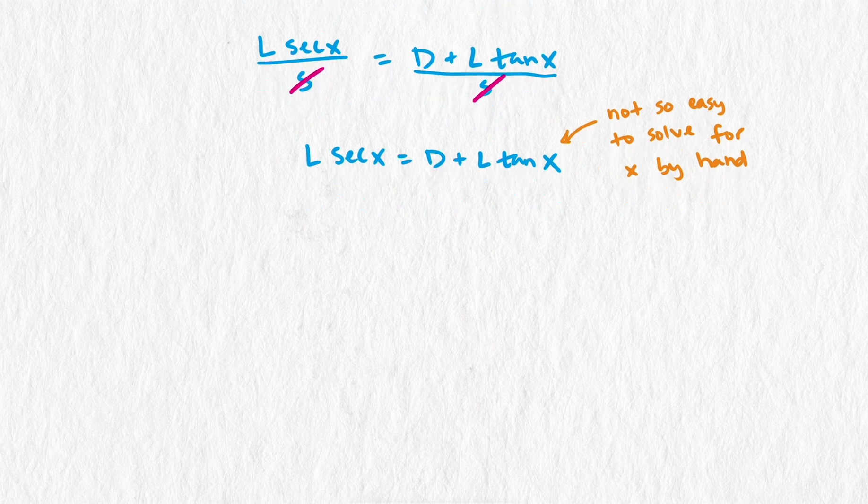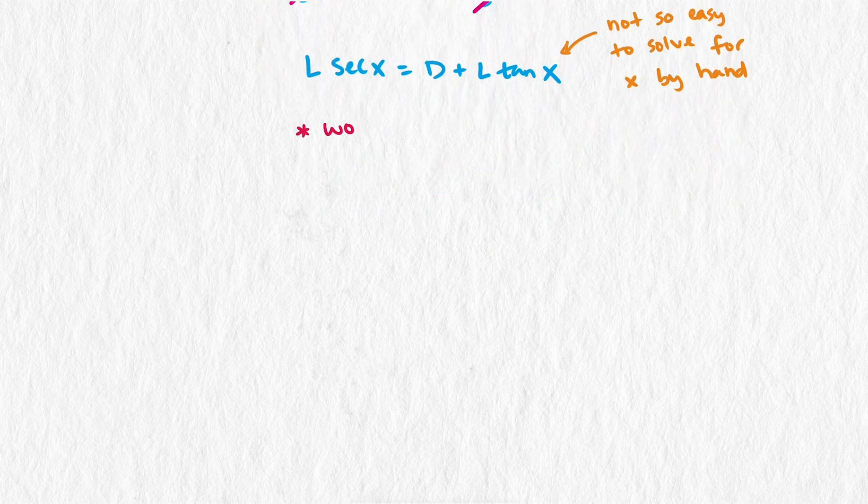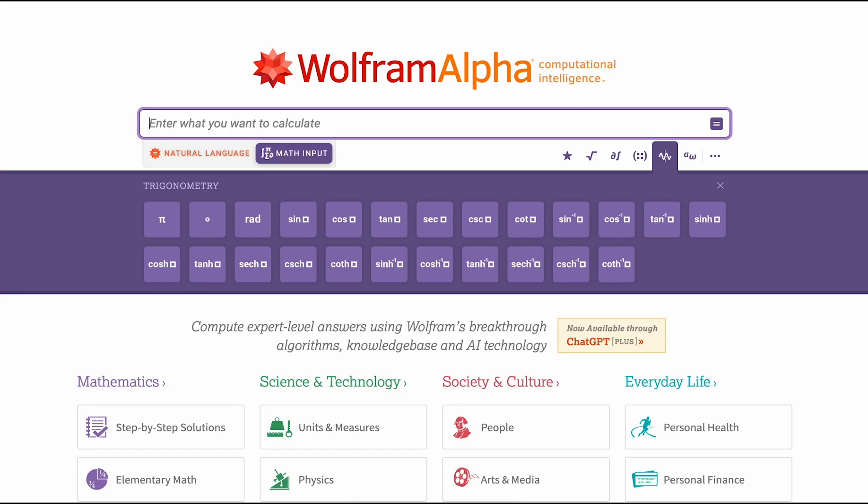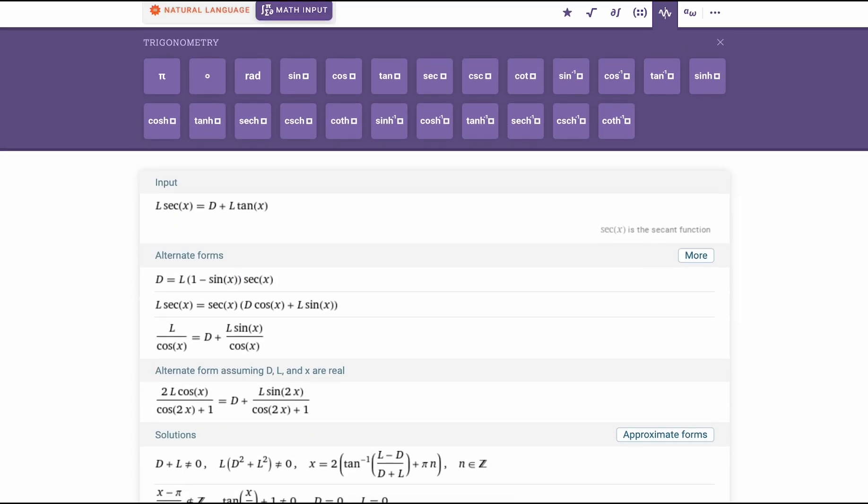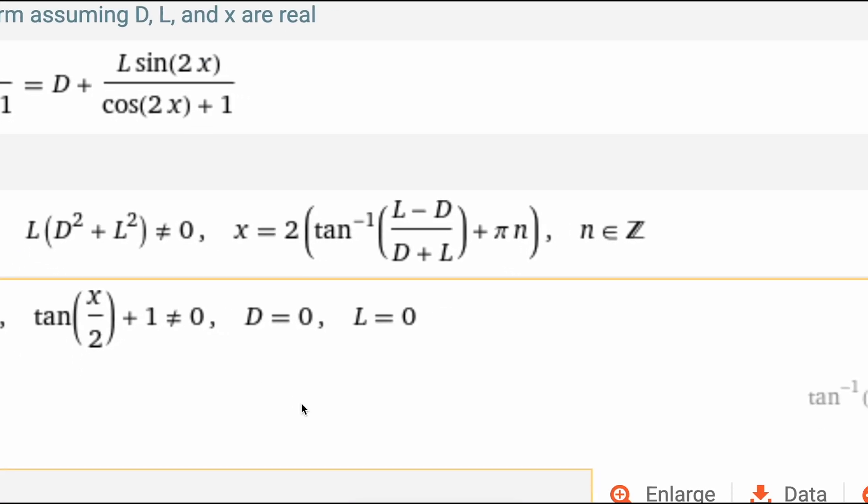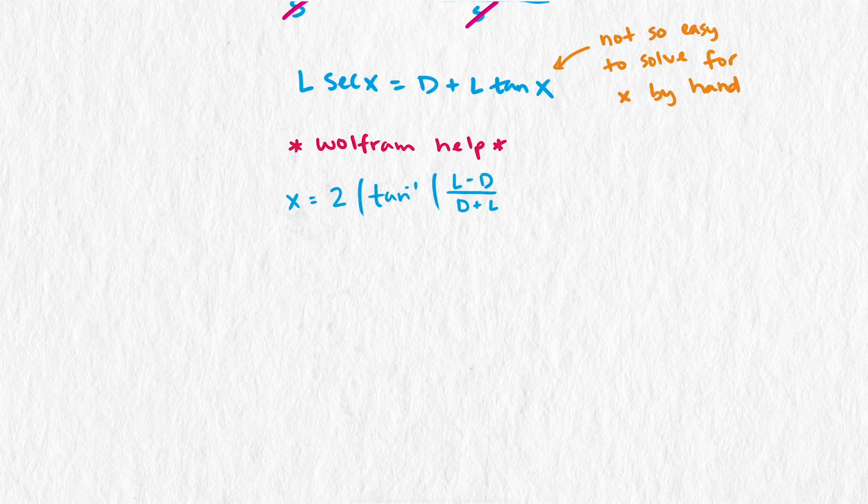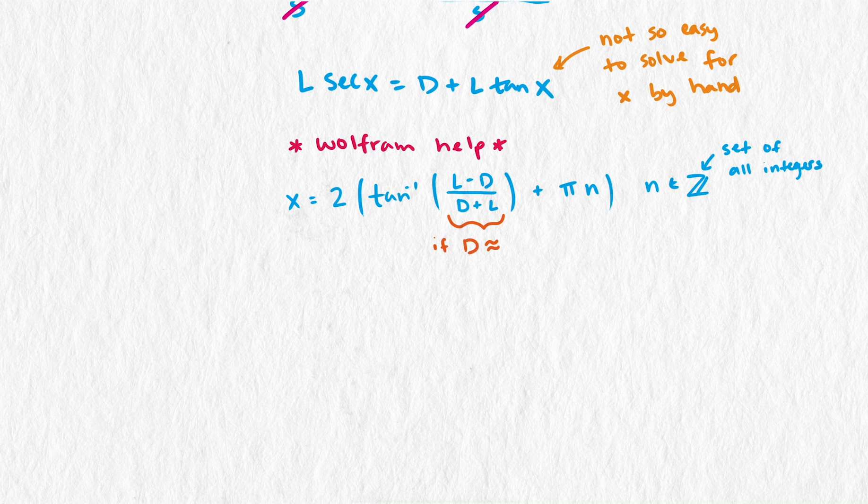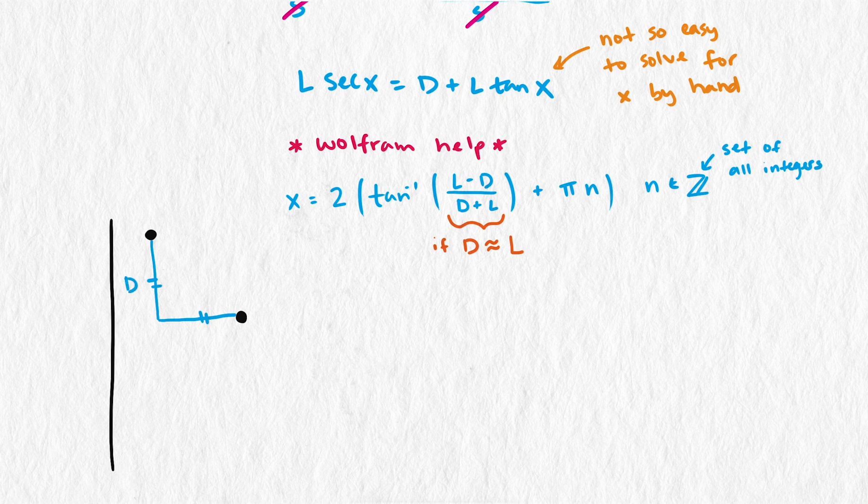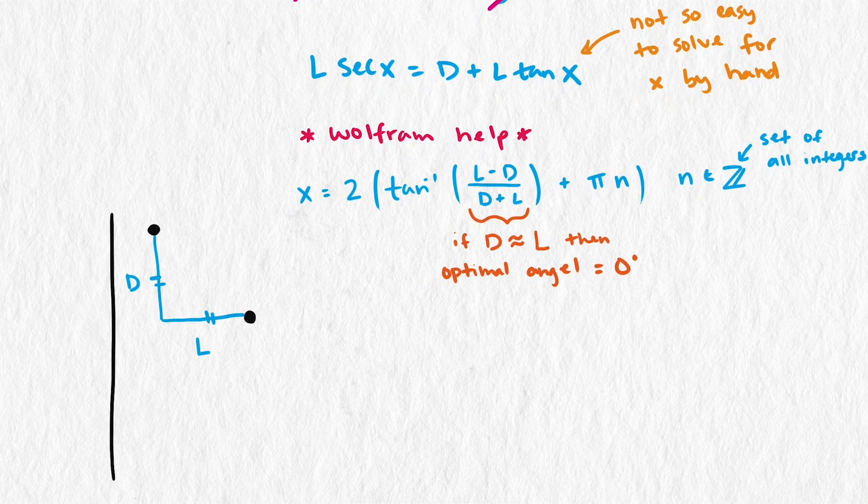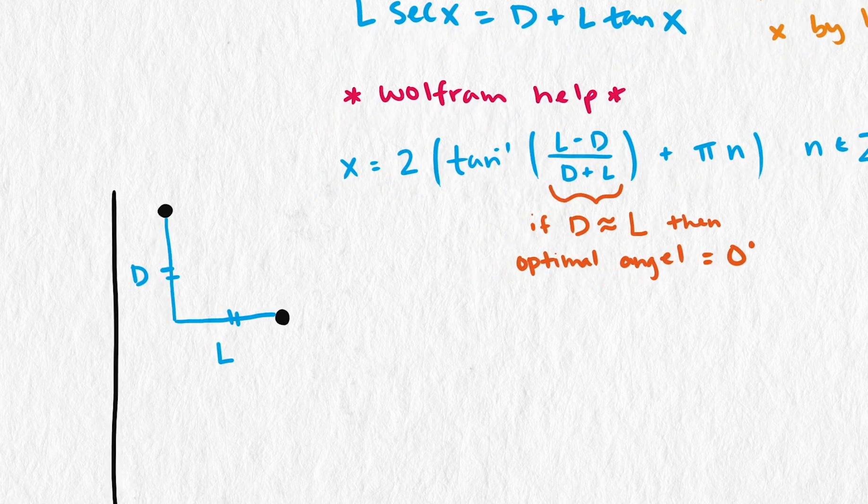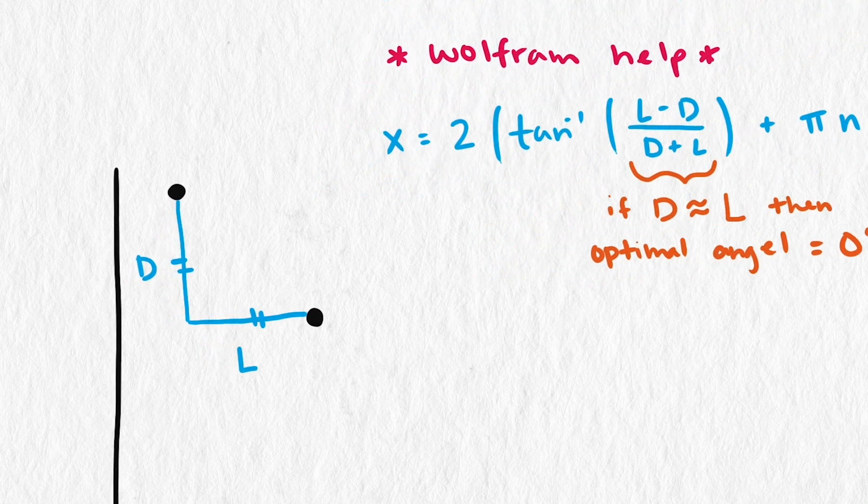This equation is beyond the solving techniques we learned in school. If we have Wolfram Alpha help us, then we can find an expression for the solutions given our two distances. But the solution is crazy and not easy to interpret. This expression inside the inverse tangent function is a little helpful. From it we can tell that if D is about equal to L, meaning the distances from the sideline and the distance down the field are approximately the same, then the optimal angle is zero. So running perpendicular to the sideline is the best option. But we didn't need an expression to tell us that. We can get that from geometry.